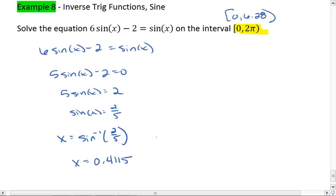And remember, because this is sine, we also have the possible solution of pi minus x, or pi minus theta. Which gives me pi minus 0.4115. I plug that into my calculator, and I find that x is going to be 2.7301.